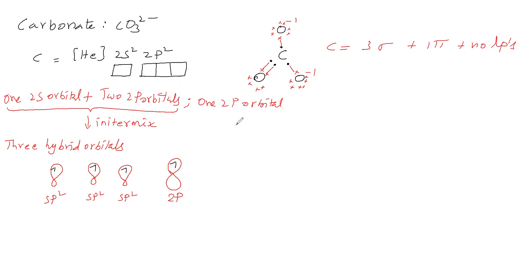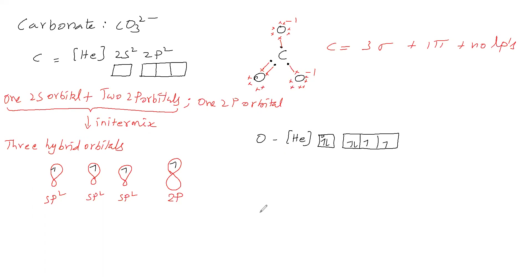Oxygen's electronic configuration is helium 2s² 2p⁴. An O⁻ ion has configuration helium 2s² 2p⁵, which contains one unpaired electron available for bonding.